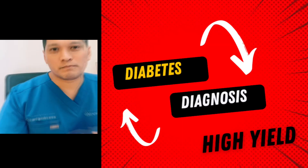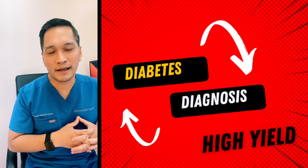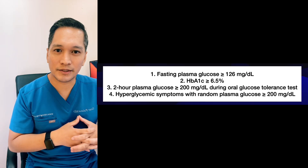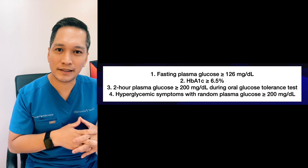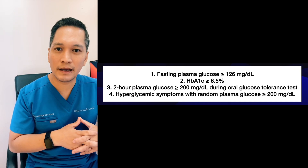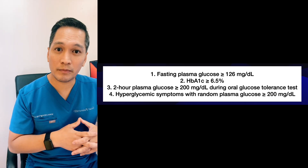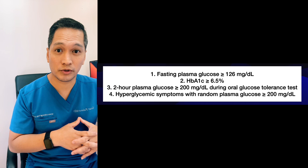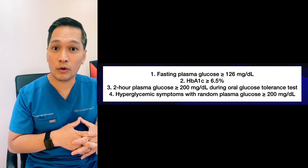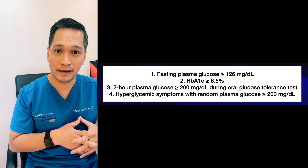Before we diagnose this patient as having diabetes, we have to understand the diabetes criteria. This includes a fasting plasma glucose of at least 126 mg/dL, a hemoglobin A1c of at least 6.5%, a 2-hour plasma glucose of at least 200 mg/dL during an oral glucose tolerance test, or fourth, hyperglycemic symptoms with a random plasma glucose of at least 200 mg/dL.